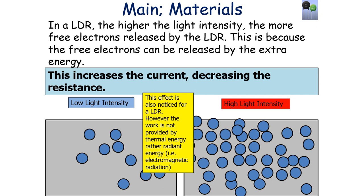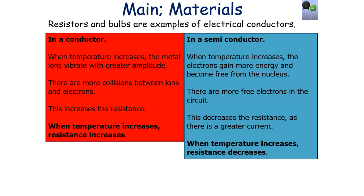This effect is also seen in an LDR, but the energy — the work — is not provided by thermal energy; rather it's radiant energy, electromagnetic radiation — light. So in an LDR, the higher the light intensity, the more energy received by the LDR, the more free electrons released, so it increases the current in the circuit and decreases the resistance.